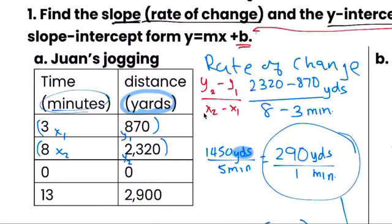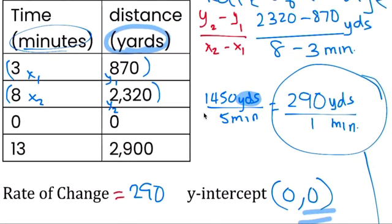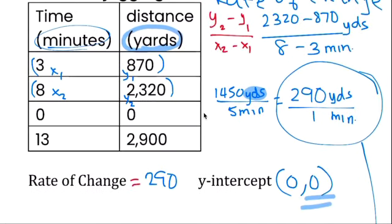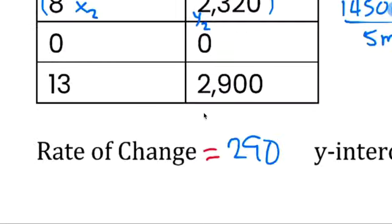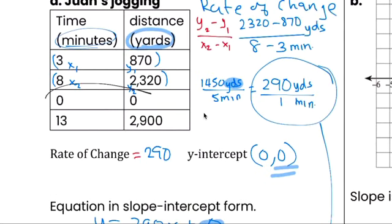Okay, first finding the rate of change for problem a, which is 90 over 1 minute, 90 yards per minute. Or 290 yards per minute, and the y-intercept is the one that starts with zero.